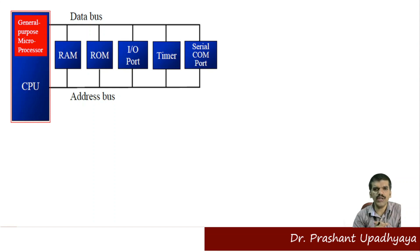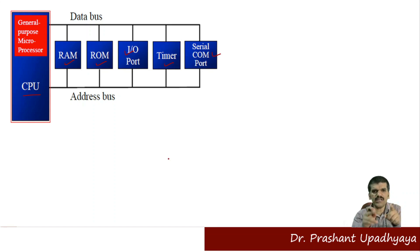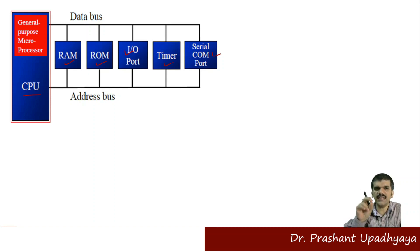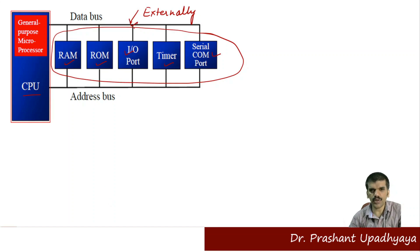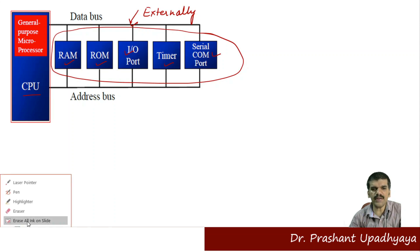Let's talk first about the microprocessor. This is the general purpose microprocessor system you can see on the screen. We have a CPU — that is the Central Processing Unit — and connected to the CPU we have RAM, ROM, input/output ports, timers, and a serial communication port. All these things — whether it is RAM, ROM, input/output port, timers, or serial communication port — they are all connected externally to the CPU.